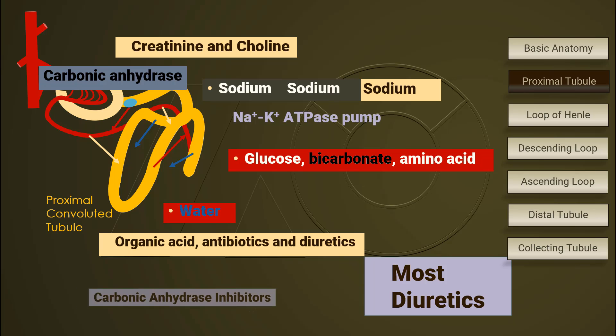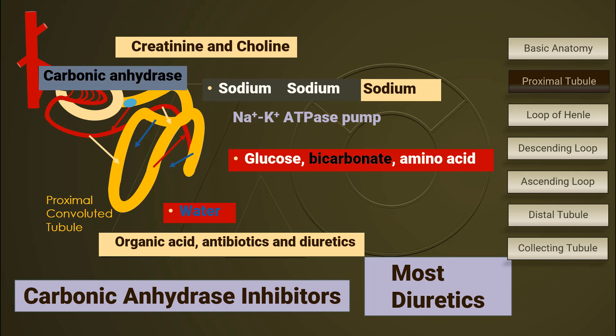Most diuretics work here on this proximal convoluted tubule. In addition, carbonic anhydrase inhibitors also work here.